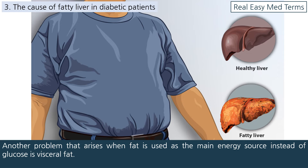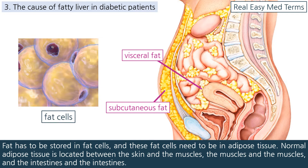Another problem that arises when fat is used as the main energy source instead of glucose is visceral fat. Fat has to be stored in fat cells, and these fat cells need to be in adipose tissue. Normal adipose tissue is located between the skin and the muscles, between the muscles, and between the intestines.